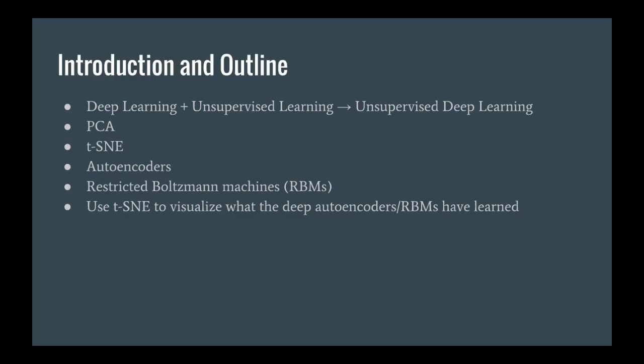Last we'll look at restricted Boltzmann machines. These are yet another popular unsupervised neural network that you can use in the same way as autoencoders to pre-train your supervised deep neural network. I'll show you an interesting way of training restricted Boltzmann machines known as Gibbs sampling or contrastive divergence, and I'll demonstrate how even though this method is only a rough approximation, it still ends up reducing other cost functions such as the one we use for autoencoders.